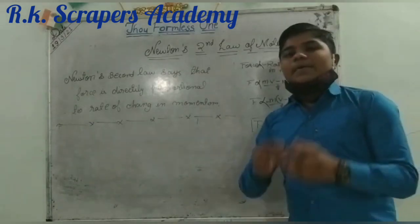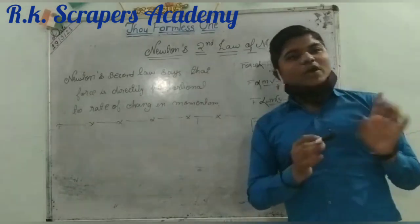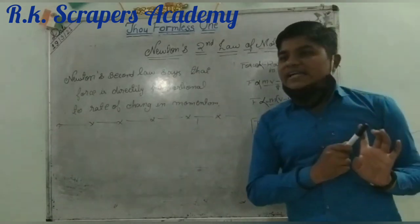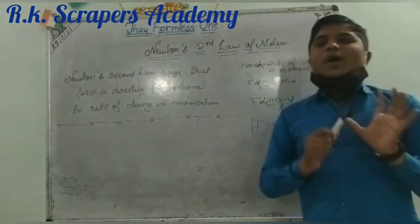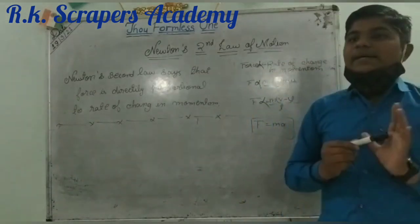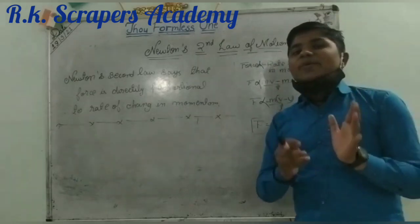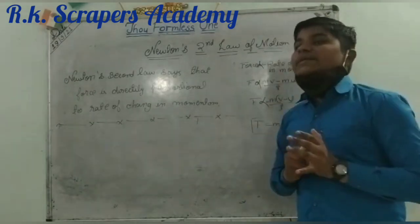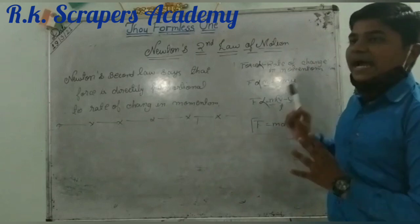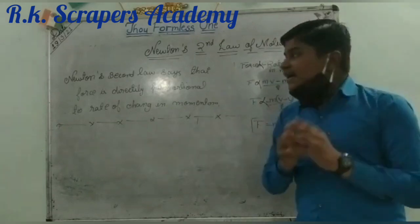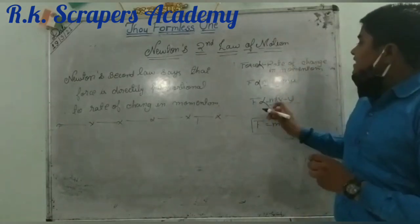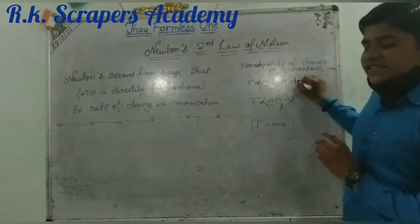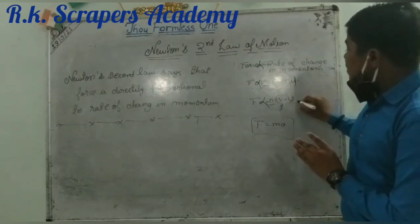Change in momentum: there are two momentum values — mv, which is final momentum, and mu, which is initial momentum. So what is the change in momentum? Change in momentum means final momentum minus initial momentum. The rate of it is upon time taken. So force is directly proportional to rate of change of momentum upon time taken.